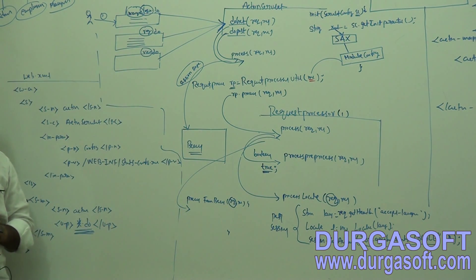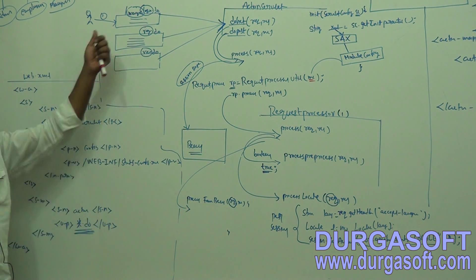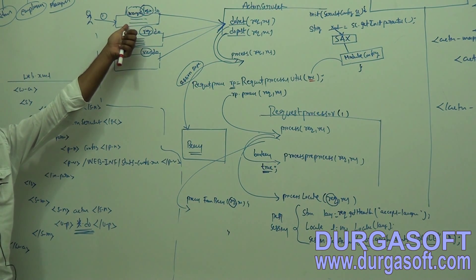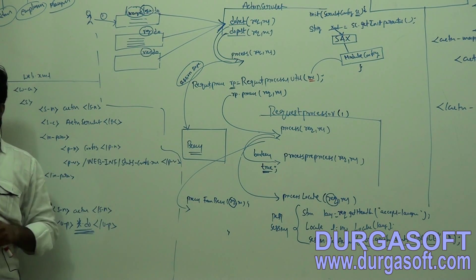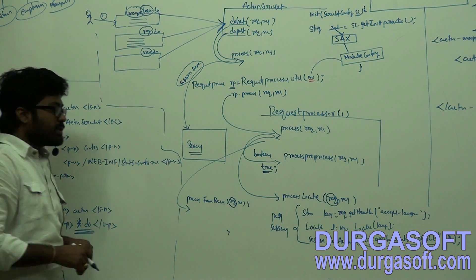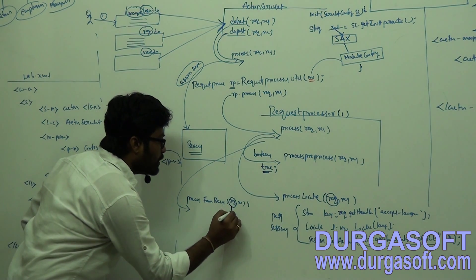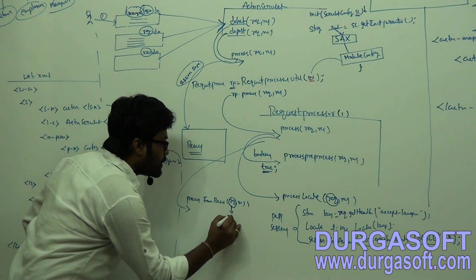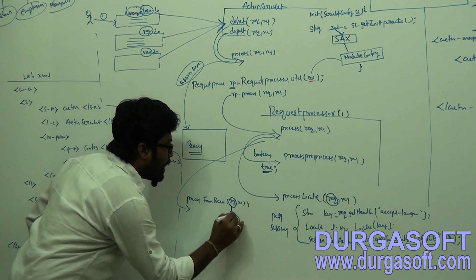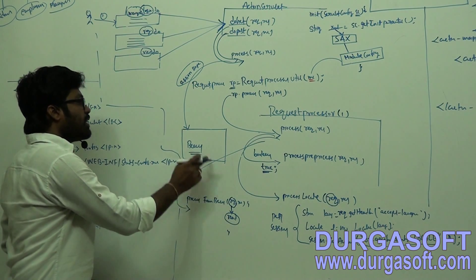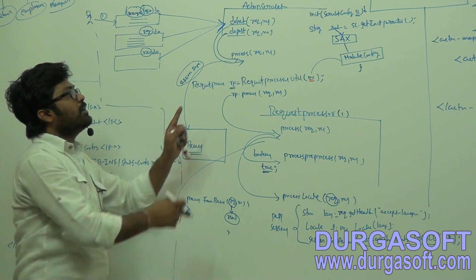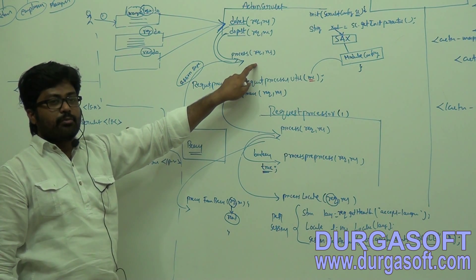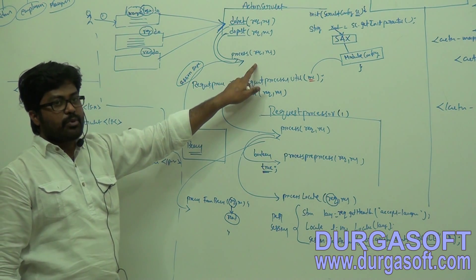The processFormBean method will read your form data from the request. If you submit username and password, this processFormBean method will store that data. It will read data from your request object and store it into the bean object. The bean object is created by ActionServlet.